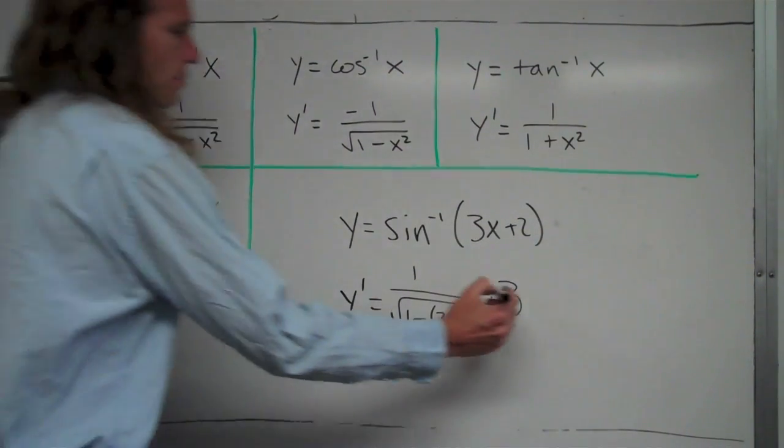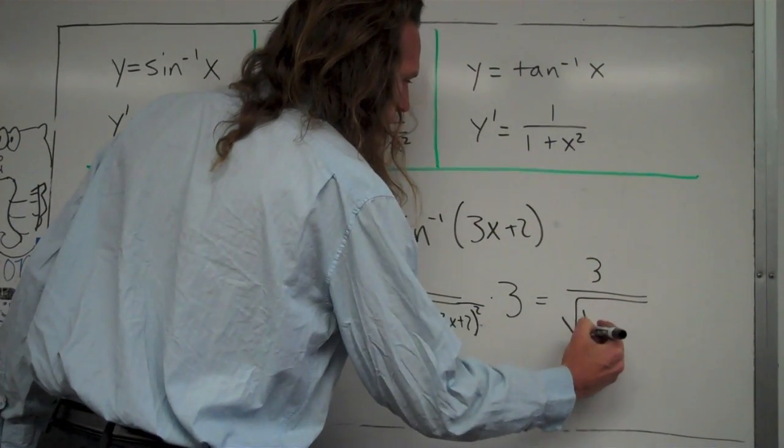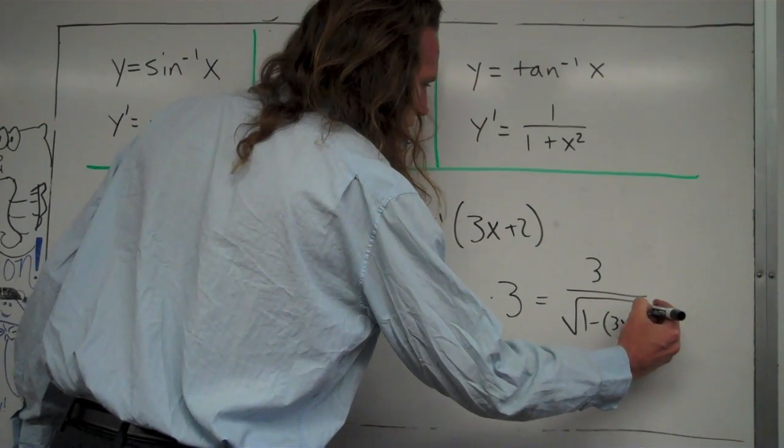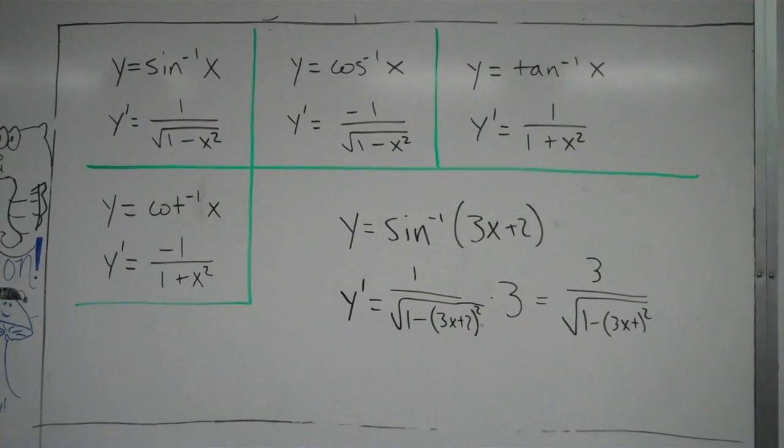And you could rewrite it with just the 3 on the top if you wanted. So 3 over square root of 1 minus 3x plus 2 squared. And of course, you could also simplify out the bottom, square it out if you wanted to, but I'm going to leave it like that. So there's one example with inverse sine.